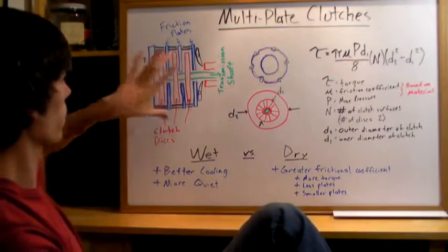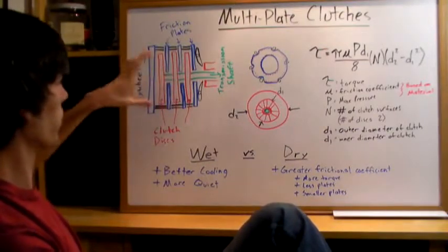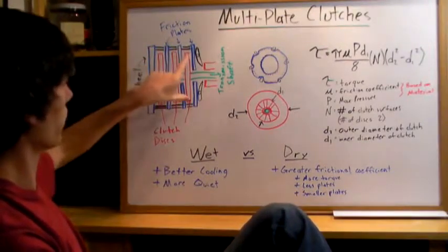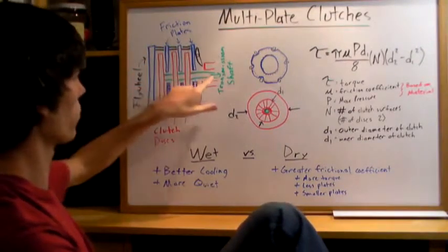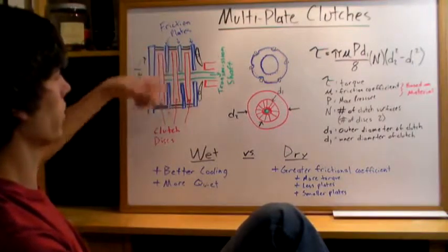As you can see here in this diagram, looking from the side, the red rectangles here are actually discs, and these are going to be the clutch discs, and these will rotate with the transmission shaft. So the red and the green are always going to be rotating at the same speed.